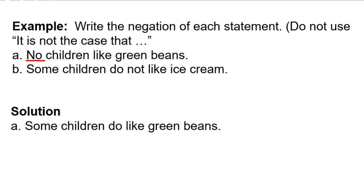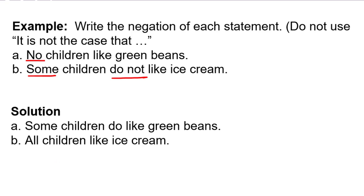For part B: 'Some children do not like ice cream.' That is an existential quantifier. When we say there is somebody who does not like it, the negation is what would make that false — which is if everybody does. So 'all children like ice cream' would be the negation.